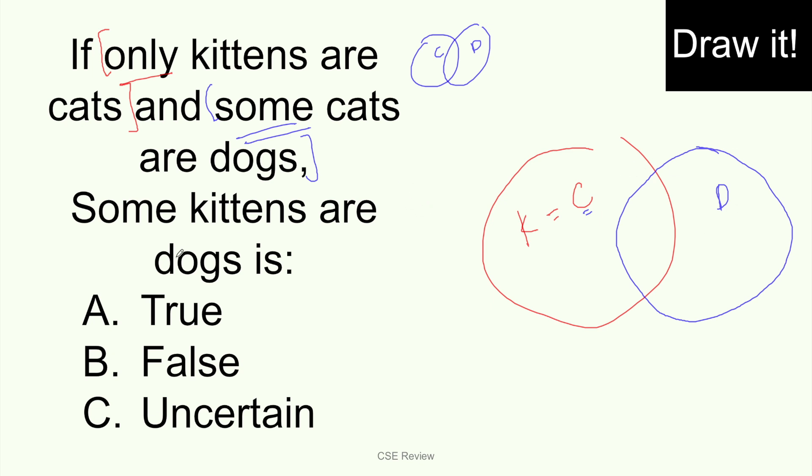So anong tanong? Ang tanong is, some kittens are dogs is, is it true, false, or uncertain? Hanapin ngayon natin sa diagram. Nasaan ang kittens? Yung K. If you can see right here, some kittens are dogs ba? Ano itsura ng some kittens are dogs? Ang itsura niya dapat, kung sino yung K, may onting dogs din doon. And if you see right here sa drawing na yun, it is true. Bakit siya true? Kasi, ayun o, ito yung kittens, di ba? And some of them are dogs too. So hindi siya false, hindi siya uncertain, sure ka 100%, kasi yun yung drawing eh. Ayun o, K, may kurot, D.